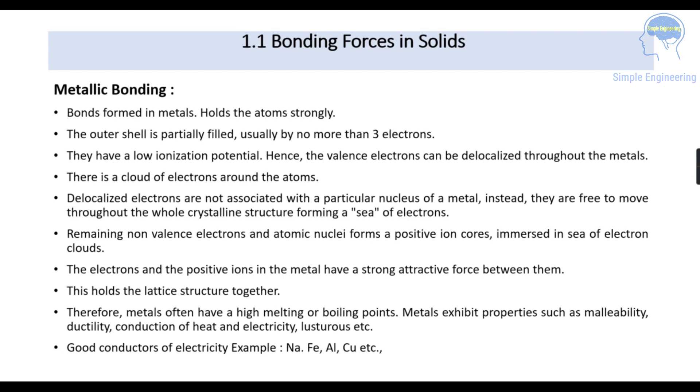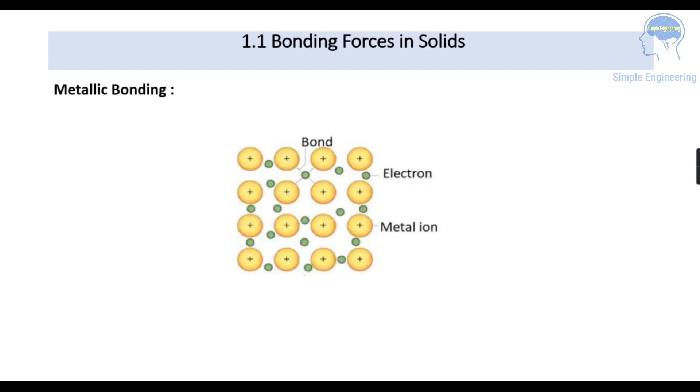For example, iron, aluminum, sodium, etc. form metallic bonding. Here you can see the metal ion is shown in positive and the electron forms a bond between the metal ions.